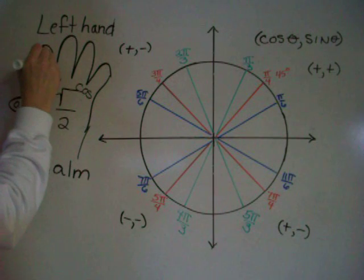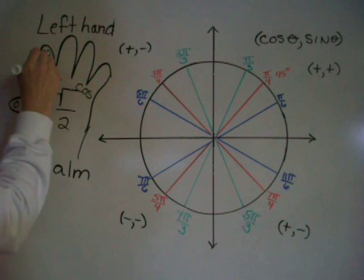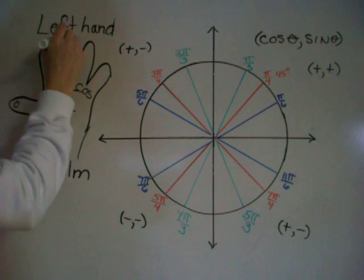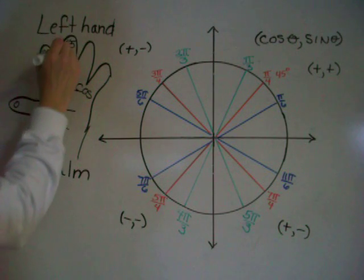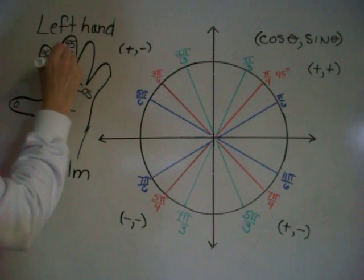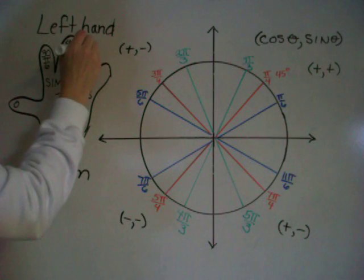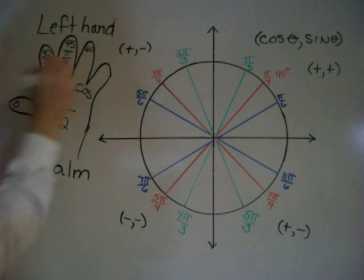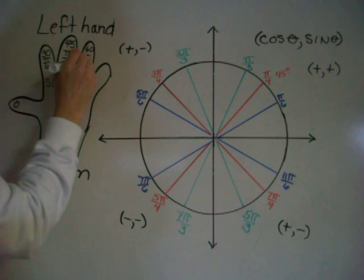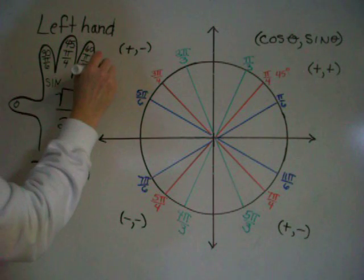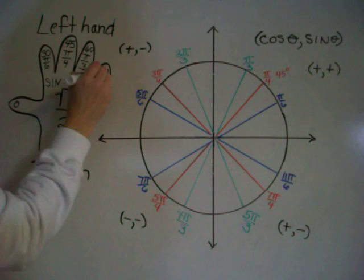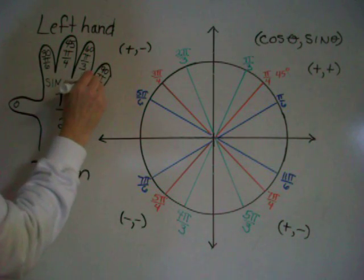On your index finger, put 30, or pi over 6. 45 on your middle finger, or pi over 4. 60 on your ring finger, or pi over 3. 90 on your little finger, or pi over 2.